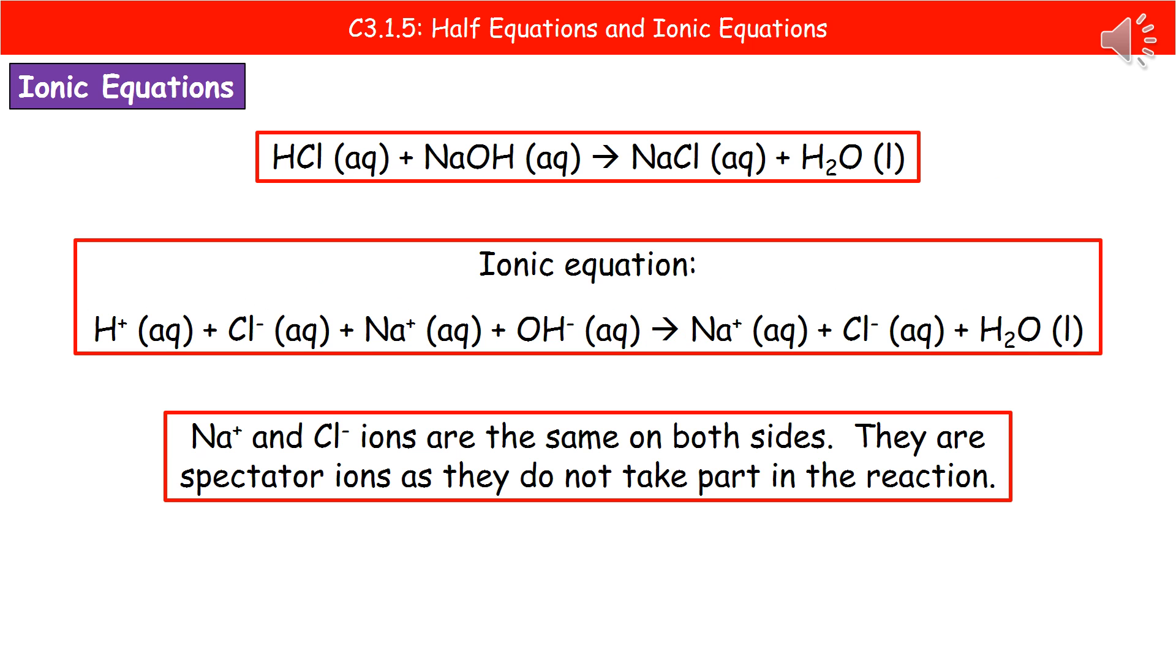So at the top there, what we've got is our balanced symbol equation. So we've got hydrochloric acid, HCl, it's an aqueous solution. Plus our sodium hydroxide, again, an aqueous solution. And we're going to make sodium chloride, an aqueous solution, and water, which is a liquid. Now, if we write the complete ionic equation, then what we need to do is split up any of those compounds that are ionic compounds into the individual ions.